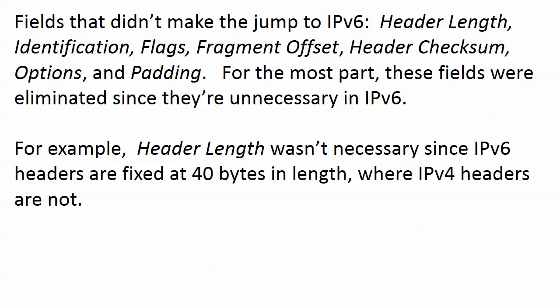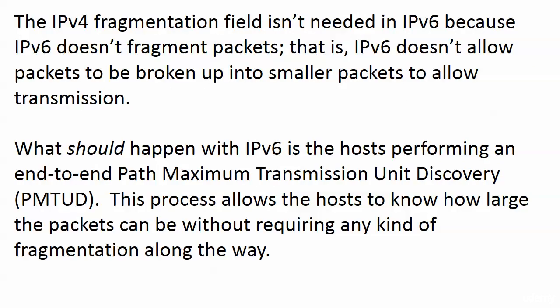The fields that didn't make the jump to the version 6 header are: header length, identification, flags, fragment offset, header checksum, options, and padding. Most were eliminated because they're not necessary in version 6. For example, version 6 headers are fixed at 40 bytes in length, while version 4 headers are not fixed. If every header is going to be 40 bytes, you simply don't need a header length field.